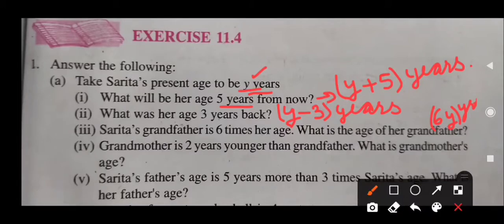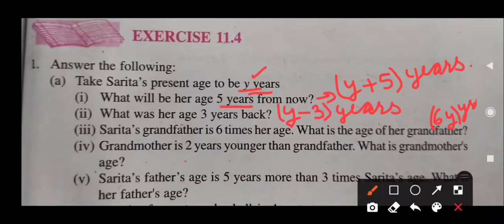Now next is the 4th part. Grandmother is 2 years younger than the grandfather. 2 years younger means we have to subtract 2 years — younger means she is the smaller one. We subtract from grandfather's age, which is 6Y. So grandmother's age comes out to be 6Y minus 2 years.